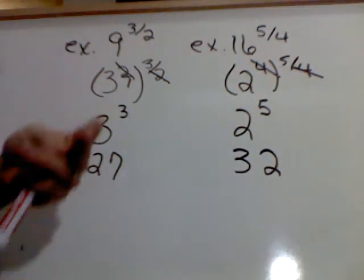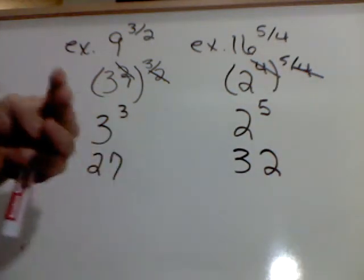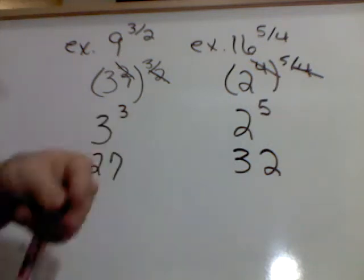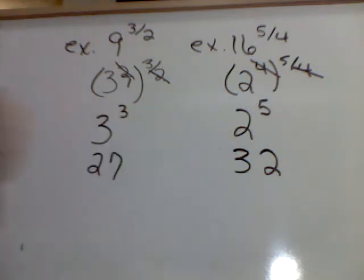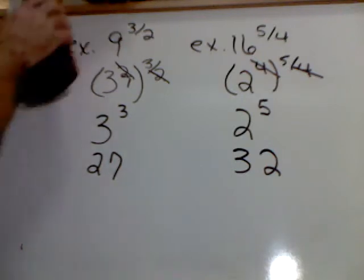2 times 2 is 4, 4 times 2 is 8, 8 times 2 is 16, 16 times 2 is 32. Alright, time for some more.